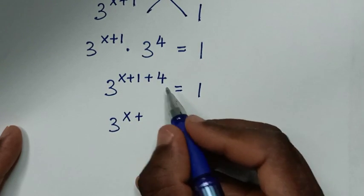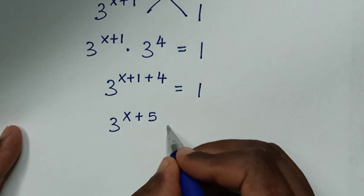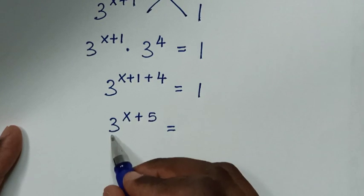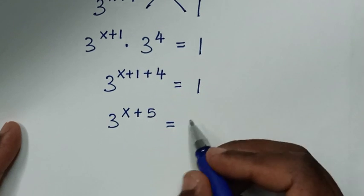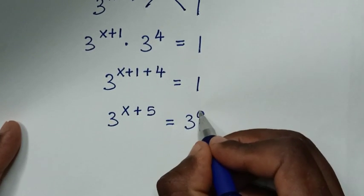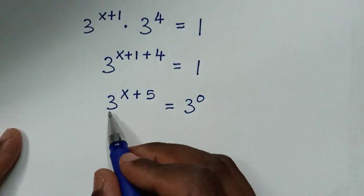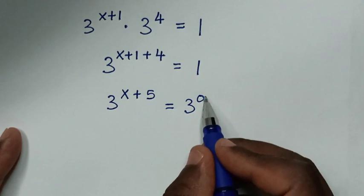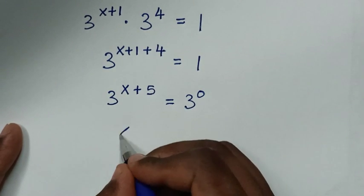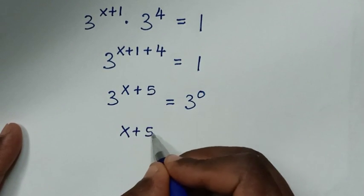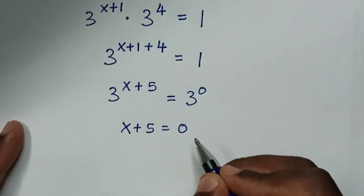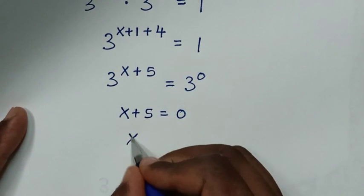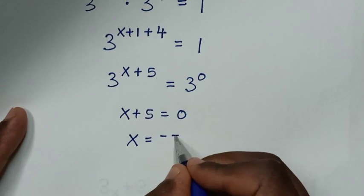Now, 1 — to have the same base of 3 — 1 is the same as 3^0. Now we have the same base of 3 on both sides, so we compare the powers: x plus 5 is equal to 0. We take 5 to the right side, so x is equal to negative 5.